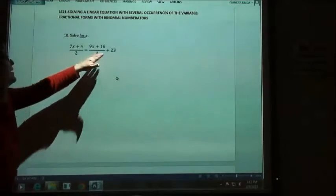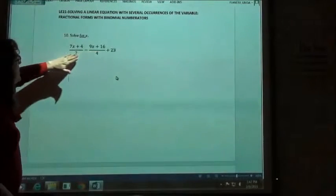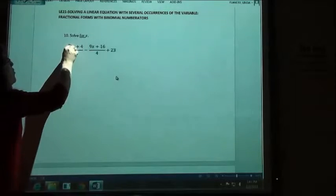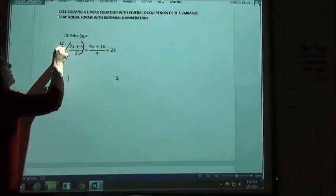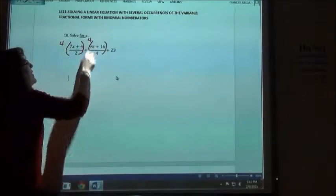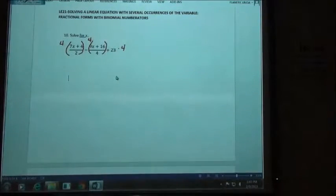Alright, so number 10. We're going to multiply by our common denominator in order to get rid of the fractions. In this case, we have a 2 and a 4, so we're going to multiply everything times 4. This is all one term, I'm going to take that times 4. This is one term, I'm taking that times 4. And the 23 I'm going to take times 4, since that's one term.